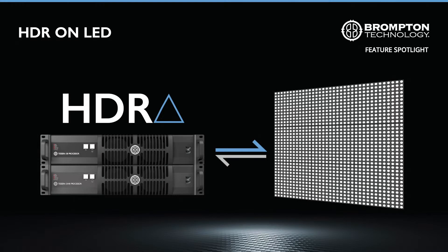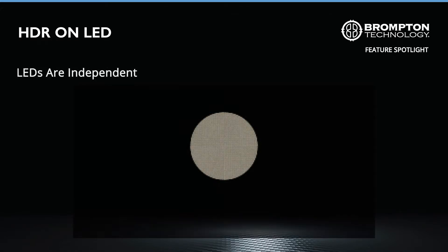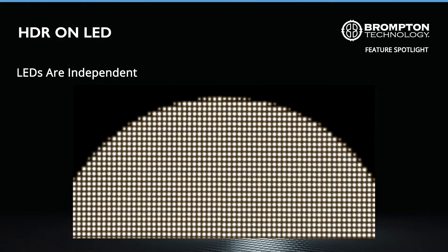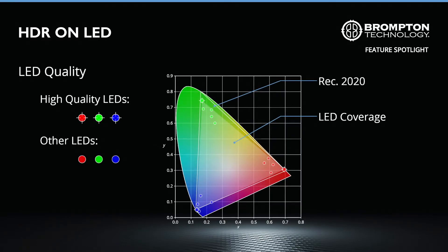Good quality LED screens are particularly well suited for displaying HDR with its image quality improvements. Unlike most other display technologies, LEDs can be incredibly bright in the thousands of nits, meaning they already have the brightness range to deliver the high contrast ratio necessary for HDR. Furthermore, LED pixels within a panel work independently from one another, meaning a fully illuminated pixel can be next to one that is completely off, making for a much sharper image. Today's high quality LEDs are capable of producing highly saturated colours that can cover almost the entire REC 2020 colour space, commonly used for HDR.